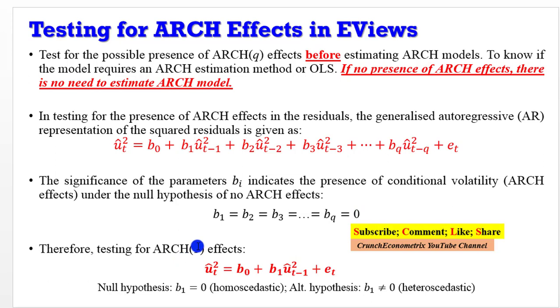Therefore, testing for ARCH(1) effects, when you have just one lag value of the dependent variable. This null hypothesis tells us that beta_1 equals zero, that the model is homoscedastic, against the alternative that b_1 is not equal to zero, that it is heteroscedastic. This is the null hypothesis we are either going to reject or fail to reject.